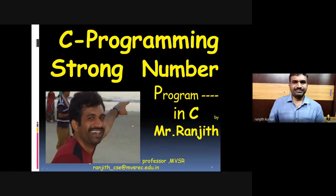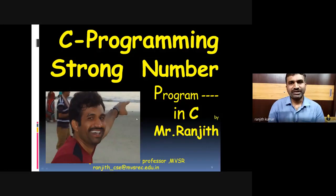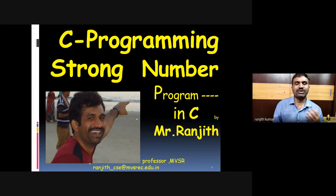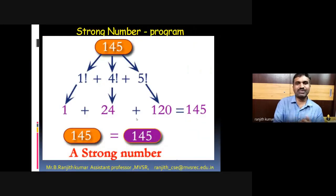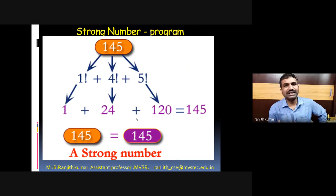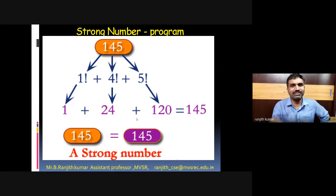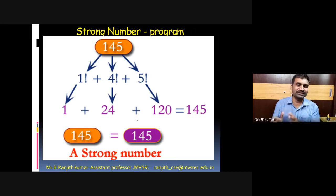Hello everyone, let us see a program on strong number. So what is a strong number and how we write a program in C language? This is an example for a strong number where we accept a number, and every individual digit's factorial will be added.